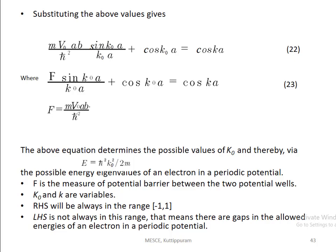From this equation, we can find all possible values of k₀, and from that we can find the energy values of an electron in a periodic potential. The energy is calculated using E = ℏ²k₀²/2m. In this equation, f is a measure of the potential barrier, and k₀ and k are variables. The right-hand side, cos(ka), is always in the range of −1 to +1. But the left-hand side can exceed this range, meaning there are gaps in the allowed energies of electrons.